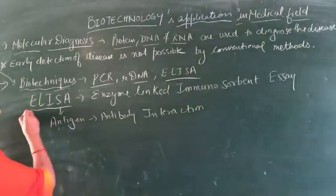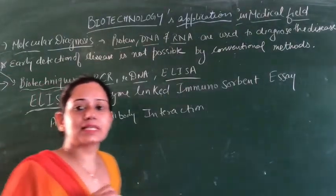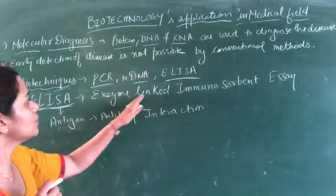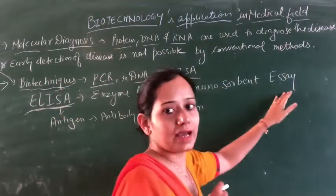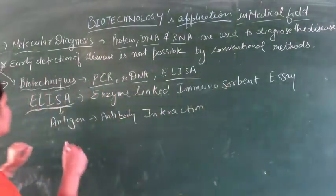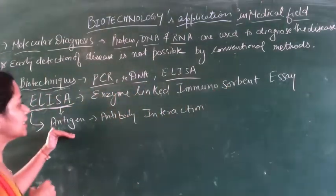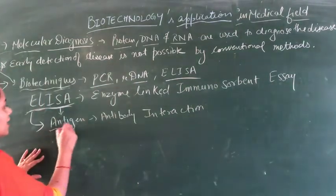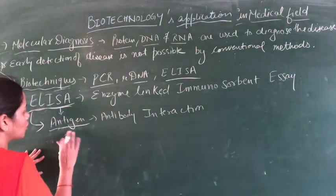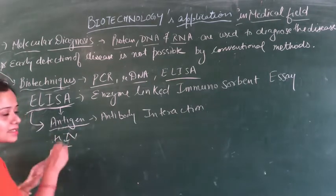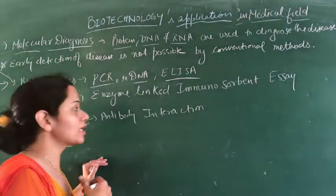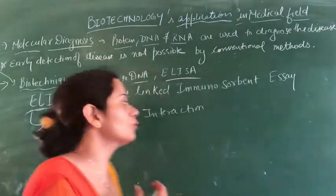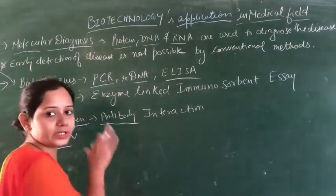The third technique is ELISA. The ELISA test is used for AIDS detection. Its full form is Enzyme-Linked Immuno-Sorbent Assay. This test depends on antigen-antibody interaction. The antigen here is the HIV retrovirus, and against it, our body produces antibodies.